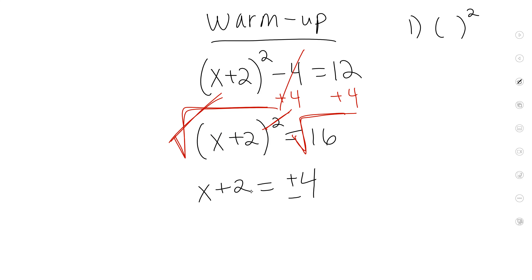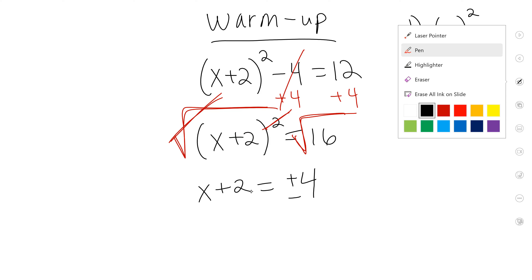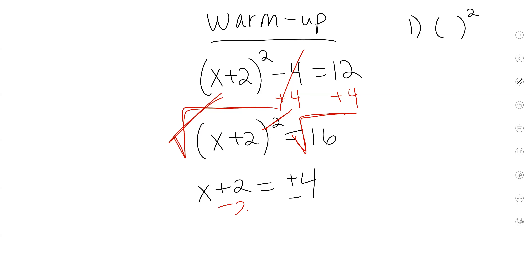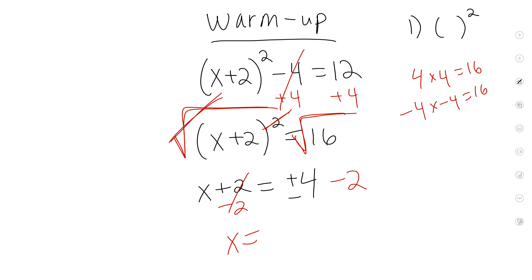And now what do I do to both sides? Subtract 2. Because 4 times 4 is 16 and negative 4 times negative 4 is also 16 — that's why there's two answers. So now my answer is 4 minus 2 is 2, and negative 4 minus 2 is negative 6. So these are my two answers.